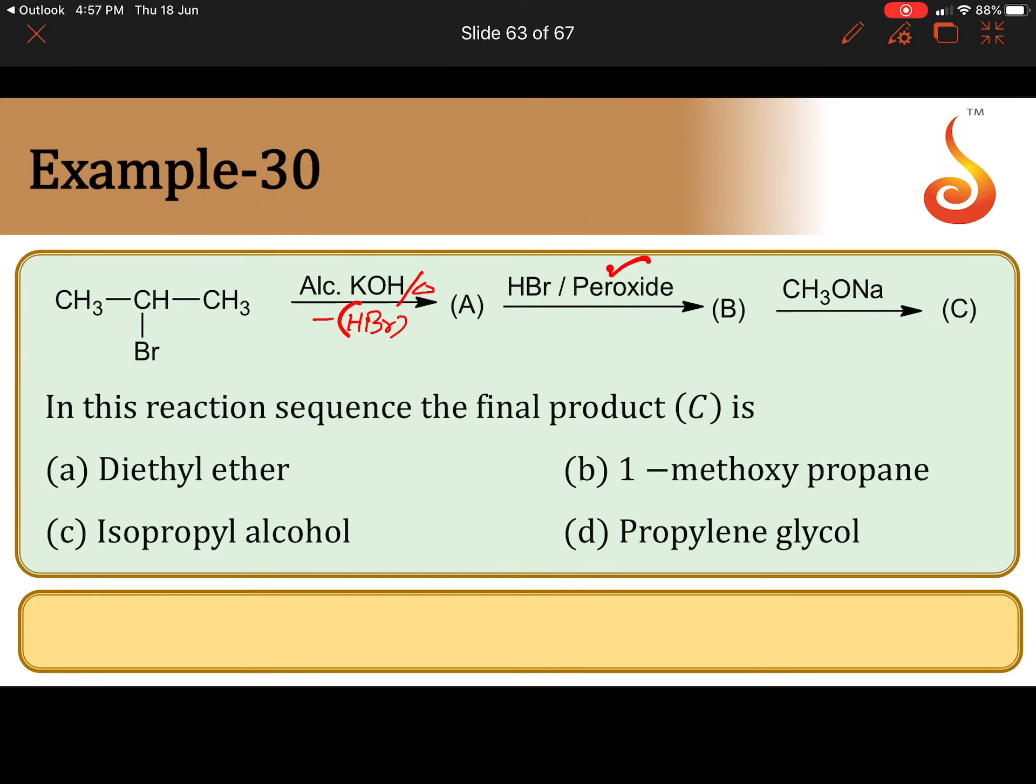After the formation of propyl bromide, it is reacted with sodium ethoxide. B to C is Williamson's ether synthesis.